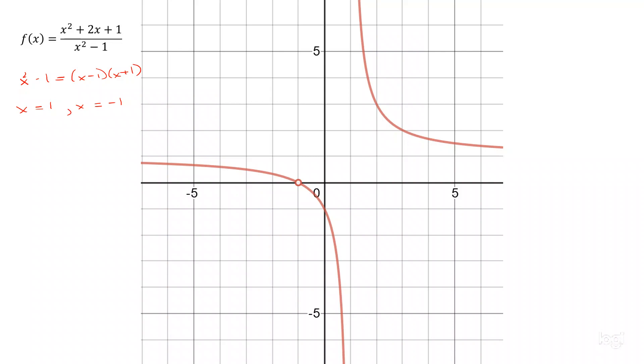The first thing we do is check what the numerator is worth in both of those cases. When we plug in 1 to the numerator, we get 1 squared plus 2 times 1 plus 1, that's equal to 4. Given that that's not zero, x equals 1 is a vertical asymptote.